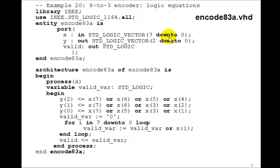But it won't be valid because a 0 output means that x0 is 1. So our inputs are the 8 x's, 7 down to 0. The outputs are the 3 y's, 2 down to 0, and then we'll have a valid output.